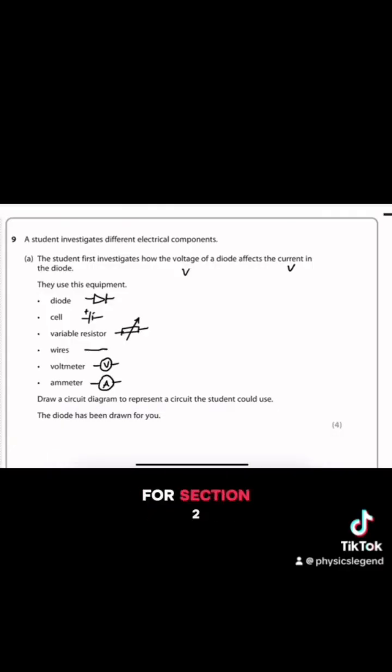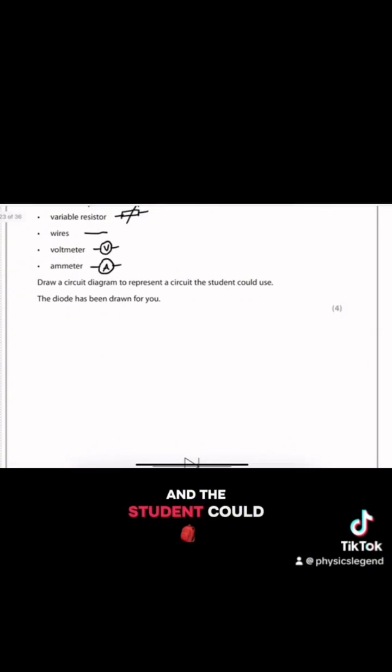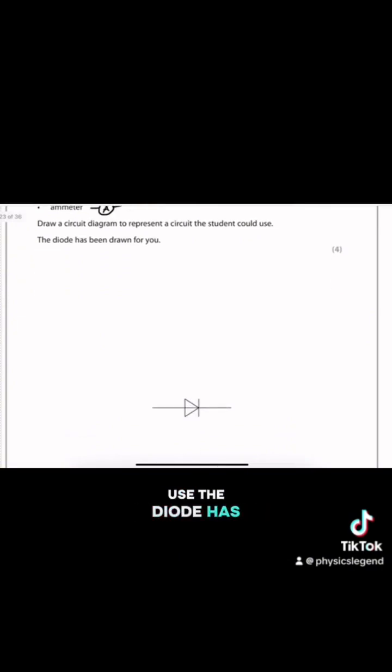For section 2, the examiner is asking to draw a circuit diagram to represent the circuit the student could use. The diode has been drawn for you. I need to connect all of these electrical components to form a simple electric circuit or a closed circuit. So we connect the cell, the diode, the variable resistor and the ammeter in series. That means one after the other in a single path.